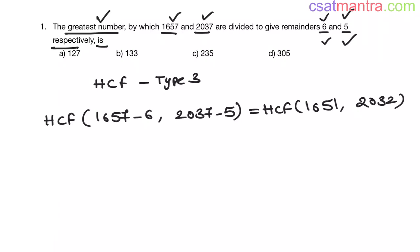Now observe the options. In C and D, last digit is 5. So if you multiply these numbers with any other number, last digit is going to be either 0 or 5. But here last digit is 1 and here last digit is 2. So C and D cannot be our answer.